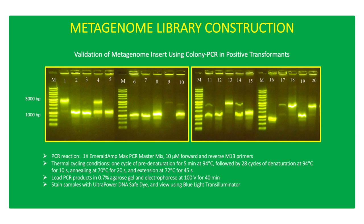Thermal cycling conditions include 1 cycle of pre-denaturation at 94 degrees Celsius for 5 minutes, followed by 28 cycles of denaturation at 94 degrees Celsius for 10 seconds, annealing at 70 degrees Celsius for 20 seconds, and a final extension at 72 degrees Celsius for 45 seconds. PCR products were electrophoresed in 0.7% agarose gel at 100 volts for 40 minutes.